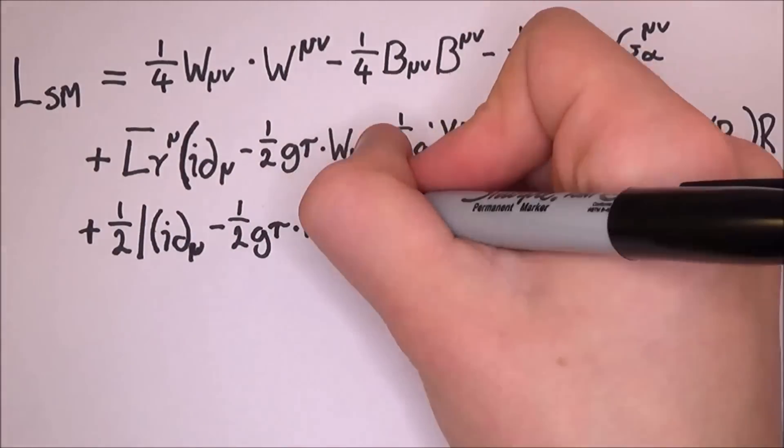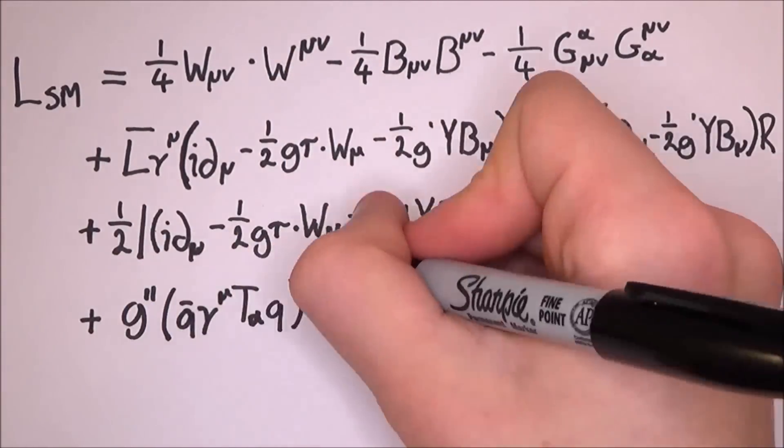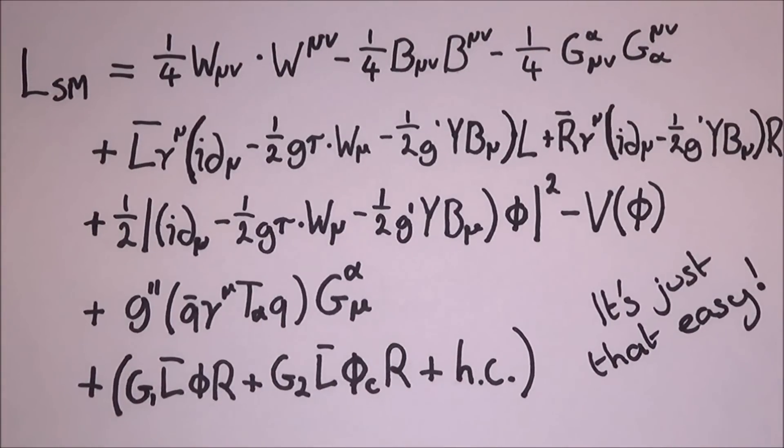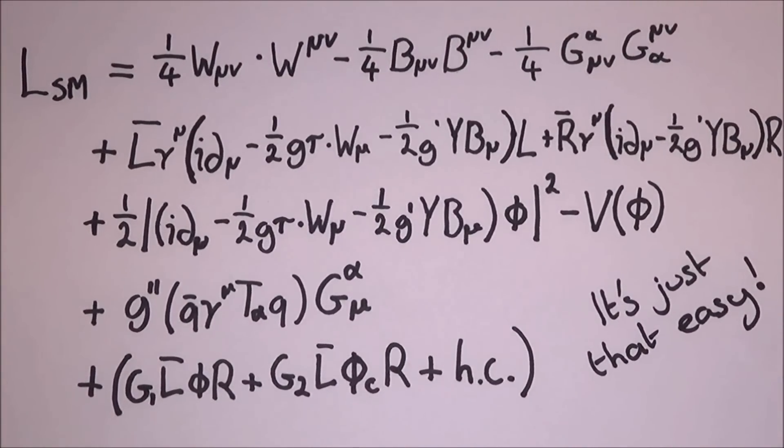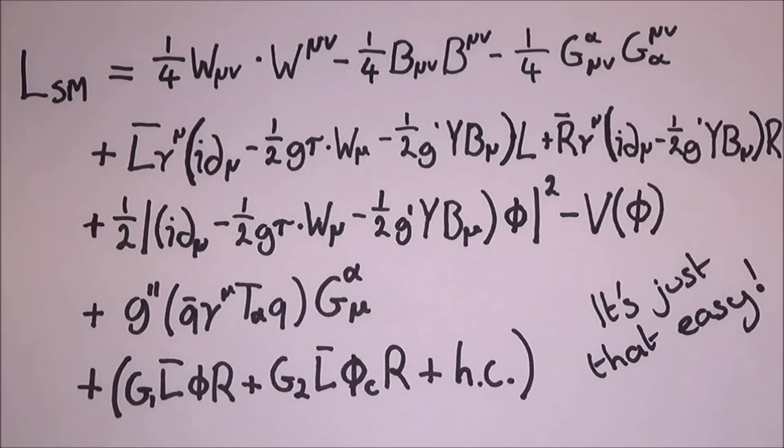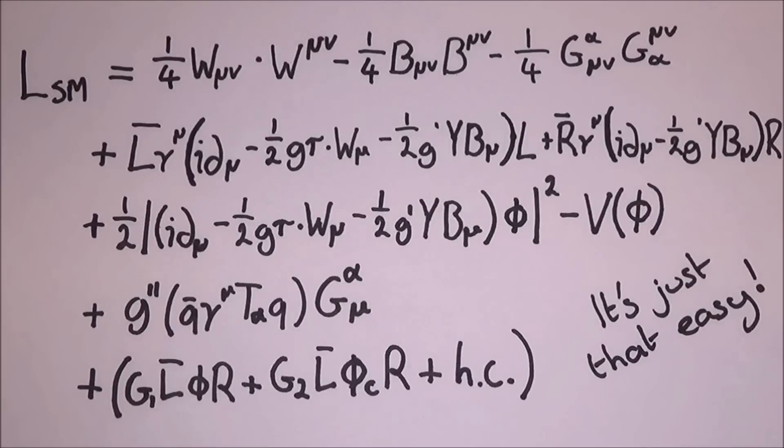The first part is all about the kinetic energies and self interactions of the gauge boson. The next part is all about the kinetic energies and the electroweak interactions of fermions. The next part is all about bosons but not the gluons. The next part is all about the interactions between quarks and gluons. And the last part is all about fermion masses and the Higgs boson.